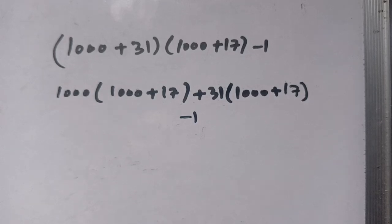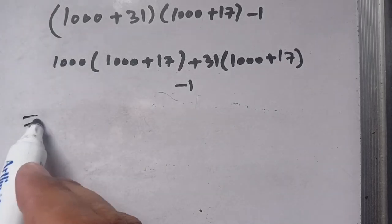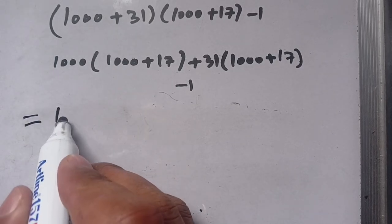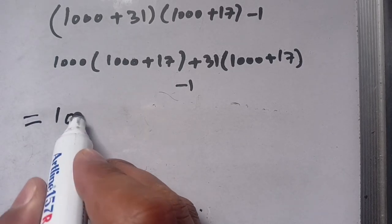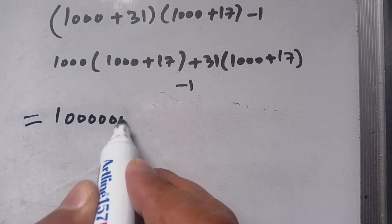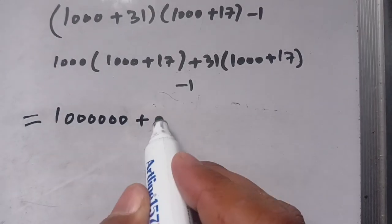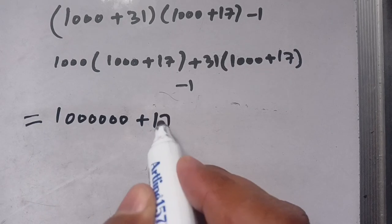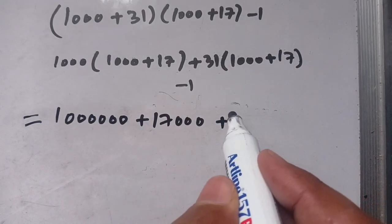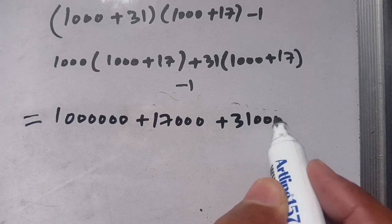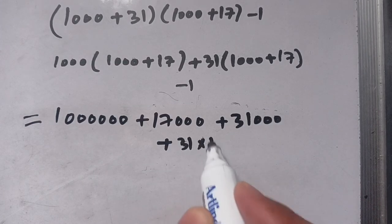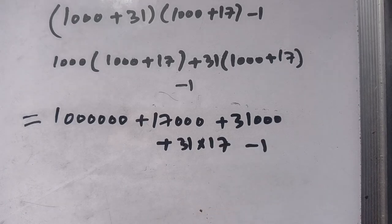In the next step, we multiply by expanding: 1000 times 1000 equals 1 million, plus 1000 times 17 equals 17,000, plus 31 times 1000 equals 31,000, plus 31 times 17, and then minus 1.